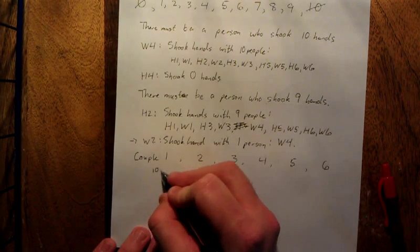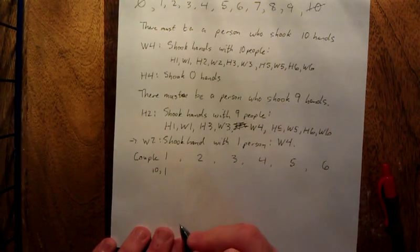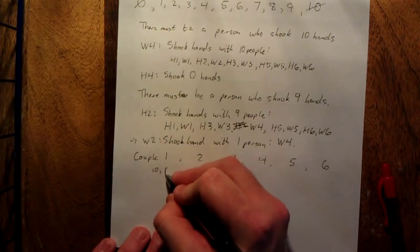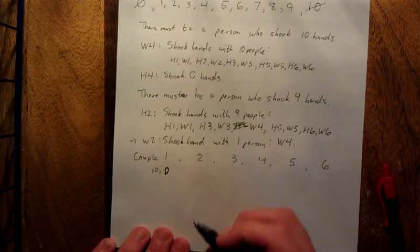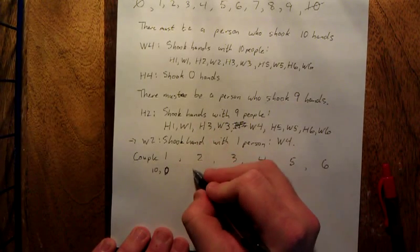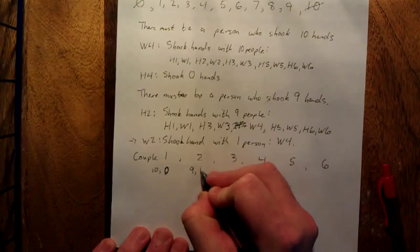Excuse me - zero, the other shook hands with zero people. Husband four, you were rude with zero people. Couple number two, one shook hands with nine people, the other shook hands with one person.